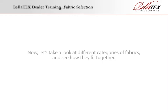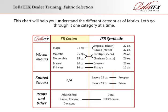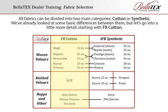Let's take a look at different categories of fabrics and see how they fit together. This chart will help you understand the different categories of fabrics. All fabrics can be divided into two main categories: cotton or synthetic. We've already looked at some basic differences between them, but let's go into a little more detail starting with FR cotton.